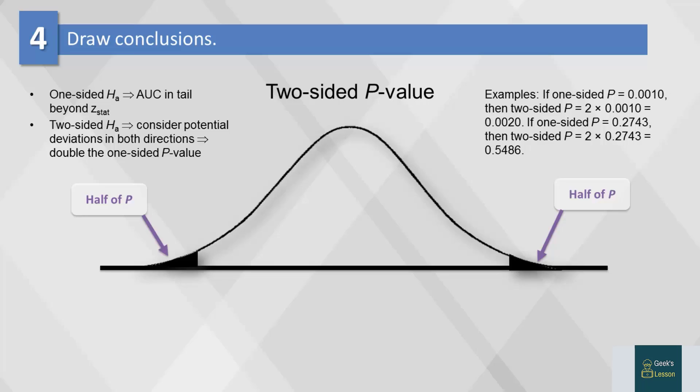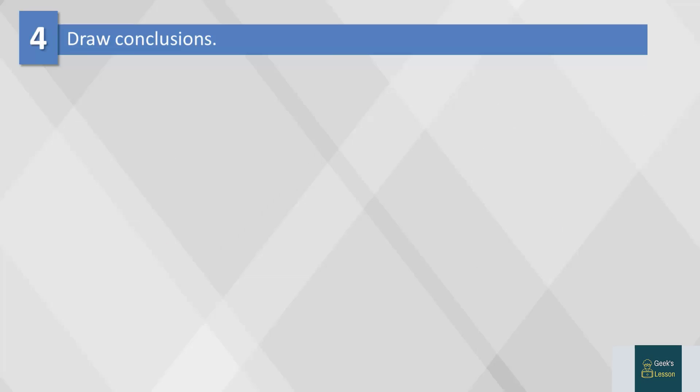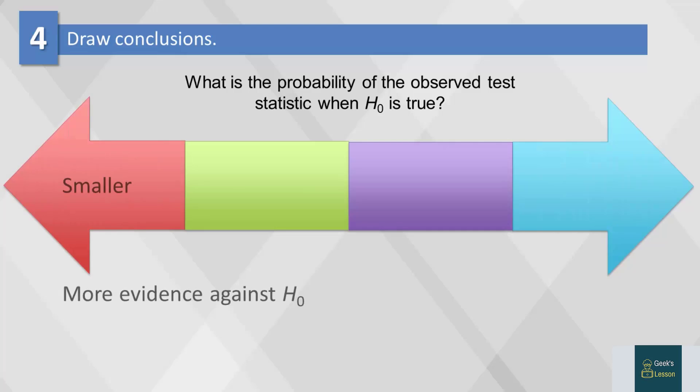Since we will be using p-values in all our subsequent analysis, it's worth emphasizing what that means. P-values ask the question, what is the probability of the observed test statistic when H0 is true? Remember, the smaller the p-value, the more likely that your null hypothesis is not true.